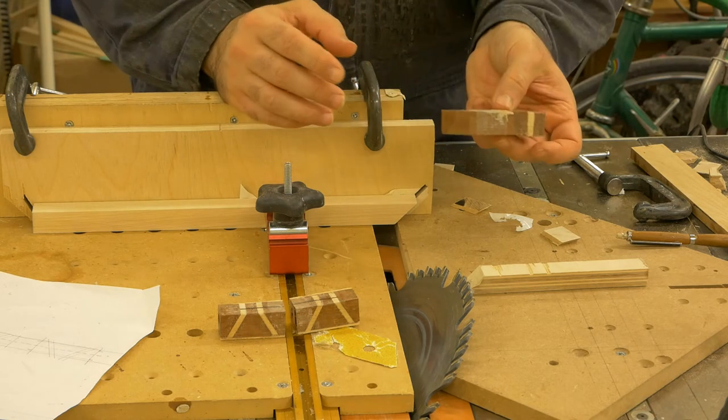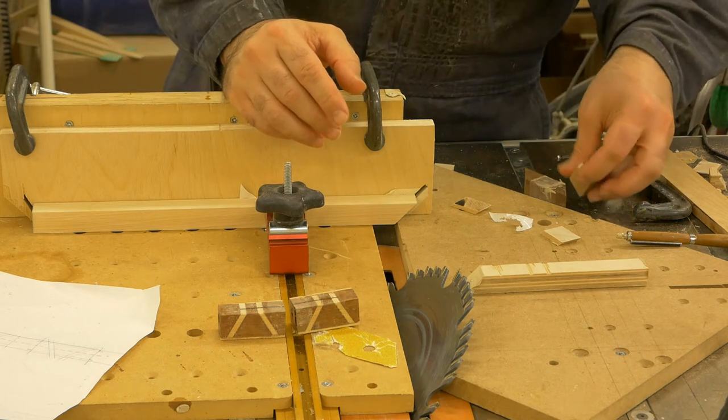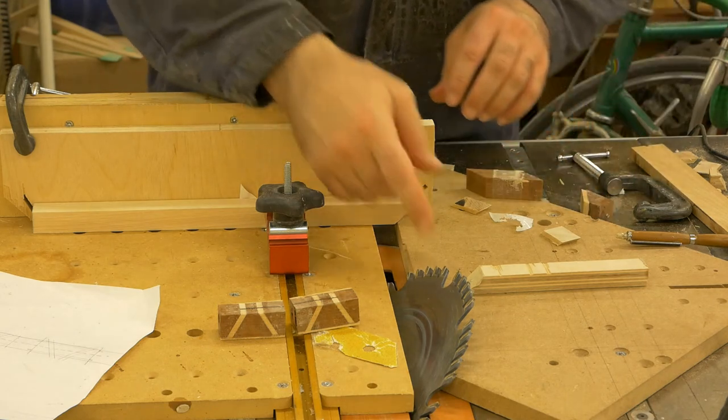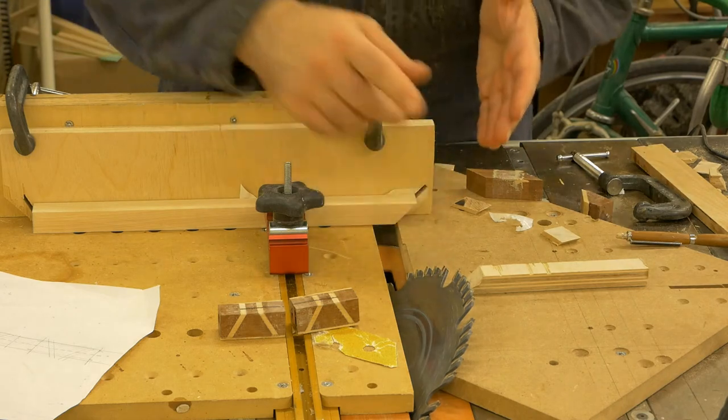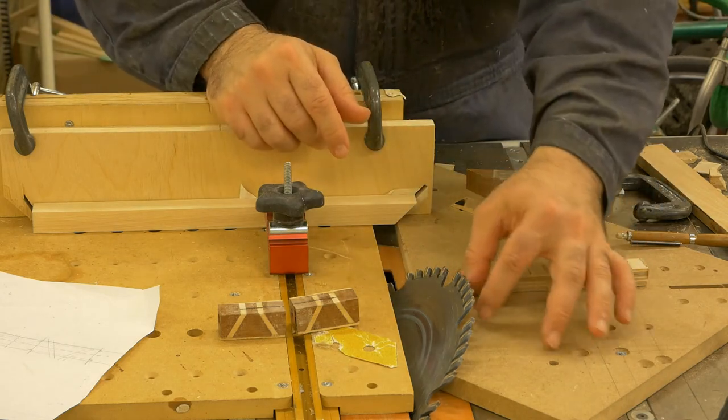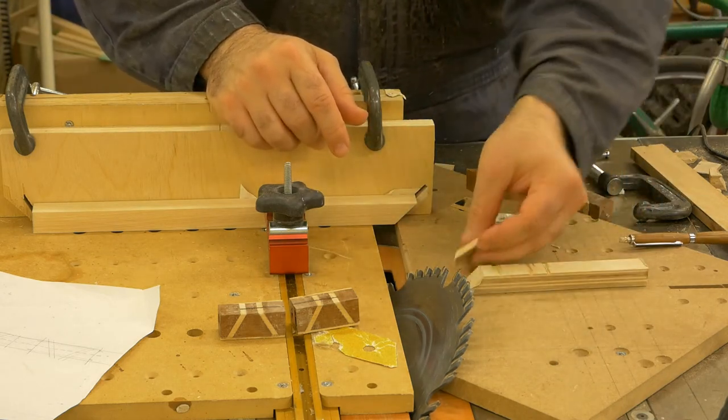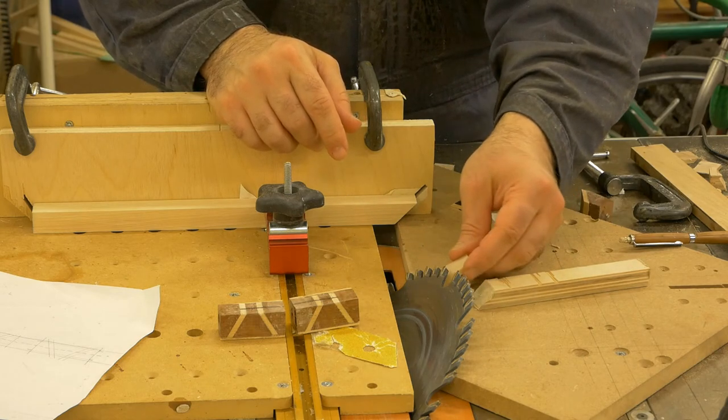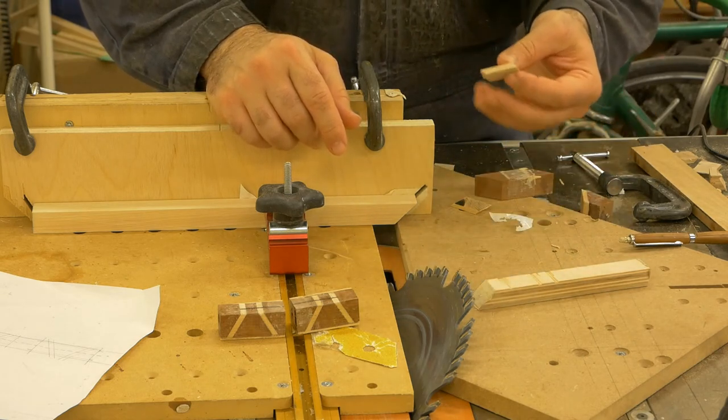The problem with the 45 degree ones is the angle of the blade. It's a lot steeper angle of the blade. So getting your fingers close, especially to pick up the few tiny pieces like these is definitely very risky.